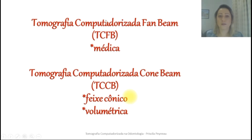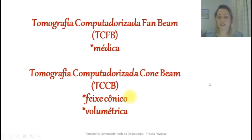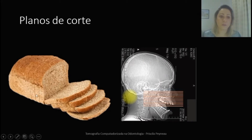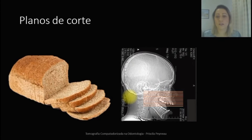Para que a gente comece a entender um pouquinho mais a tomografia, devemos lembrar de alguns planos de corte. Vamos relembrar um pouco isso. Para facilitar o entendimento, se a gente fizer uma analogia com essa imagem aqui do pão de forma fatiado, seria como se o nosso crânio também fosse fatiado em fatias. E cada fatia dessas, nós podemos observar determinadas estruturas ósseas.